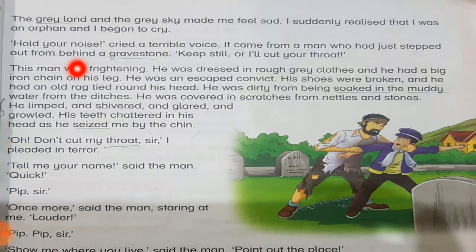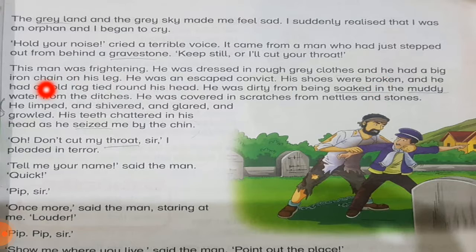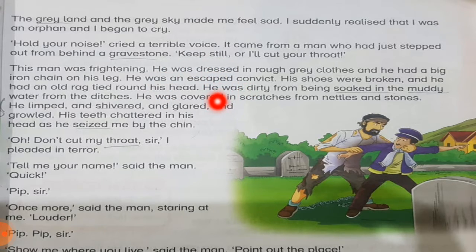'Hold your noise!' cried a terrible voice. It came from a man who had just stepped out from behind a gravestone. 'Keep still or I'll cut your throat!' This convict — the prisoner — threatened Pip. He was dressed in rough gray clothes and he had a big iron chain on his leg. He was an escaped convict who had escaped from prison.